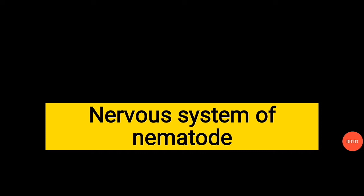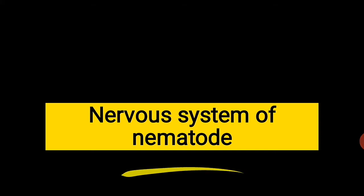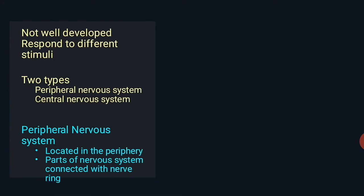Hi friends, I'm Priyanka, welcome to Entomology Coaching. Today we talk about the nervous system of the nematode body. It is not well developed as in human beings and responds to different stimuli. It is of two types: peripheral nervous system and central nervous system.